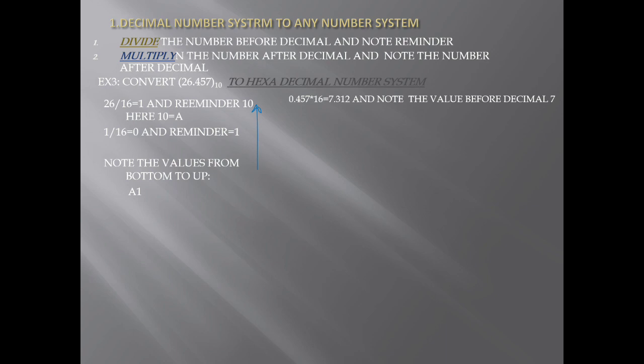For the fractional part, 0.457 is multiplied by 16, giving 7.312. Note the digit before the decimal: 7.